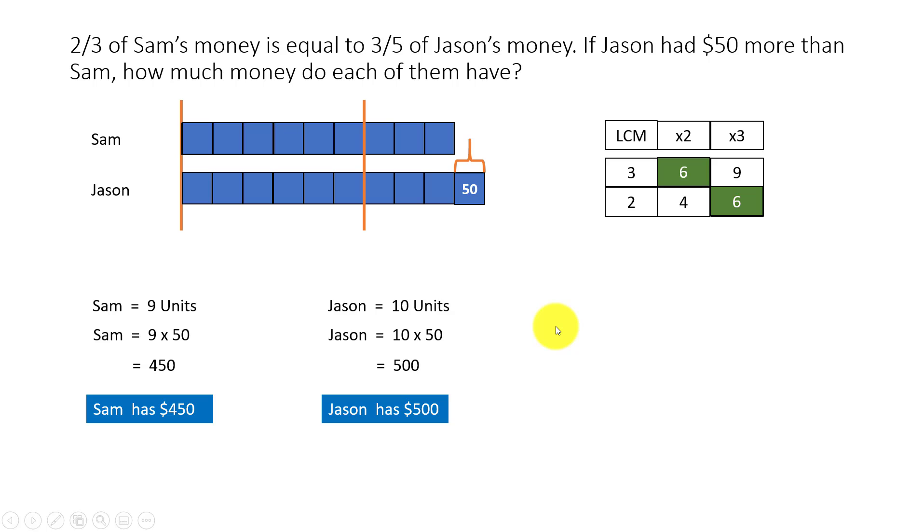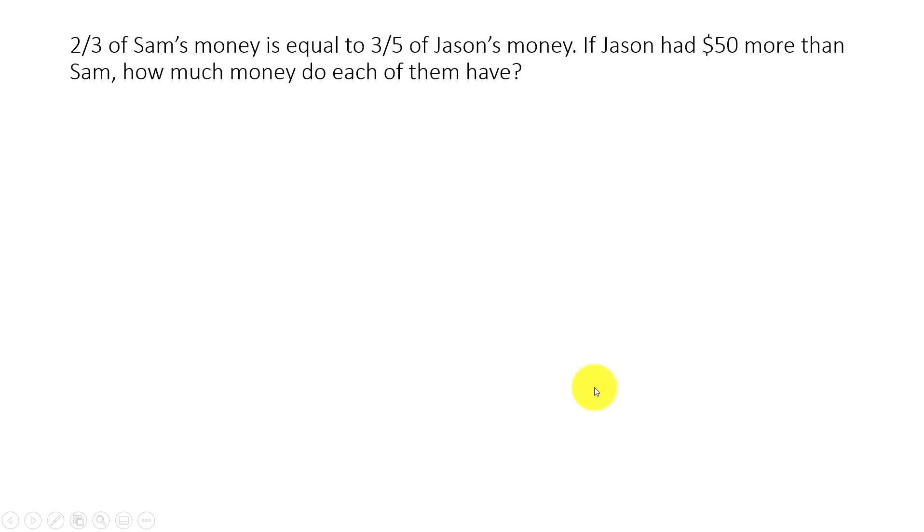Next, we are going to see how the same problem can be solved using algebra. If you are not so keen in going to algebra, you can stop here. If not, we will look at how to solve the problem using algebra. The question remains the same: two thirds of Sam's money is equal to three fifths of Jason's money. If Jason had $50 more than Sam, how much money do each of them have?